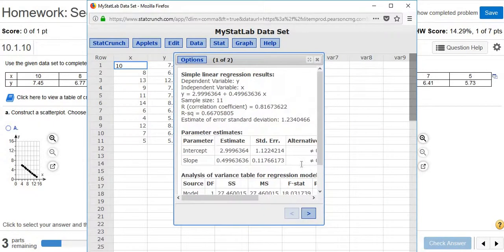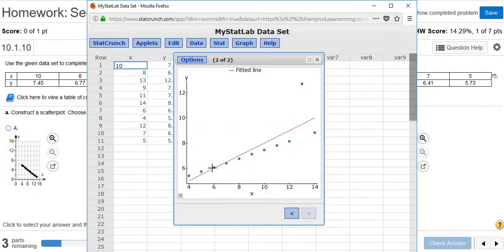And then there's a little arrow here on the bottom right, a little symbol. Click that, and then there's your scatter plot.